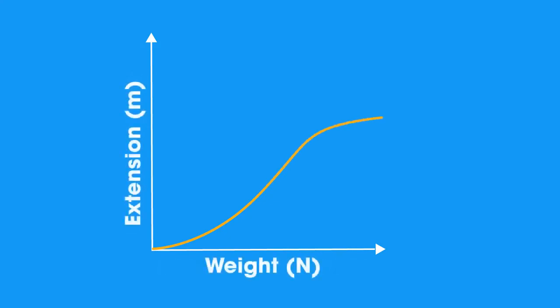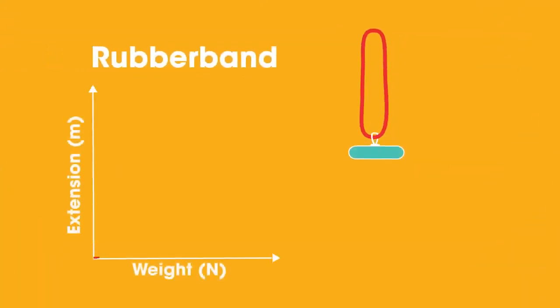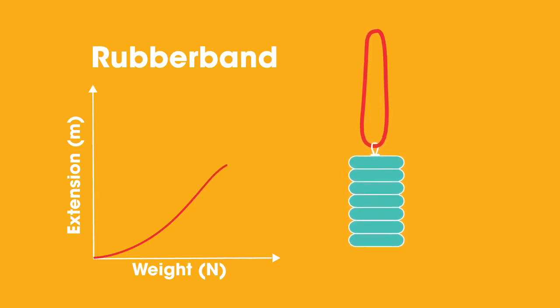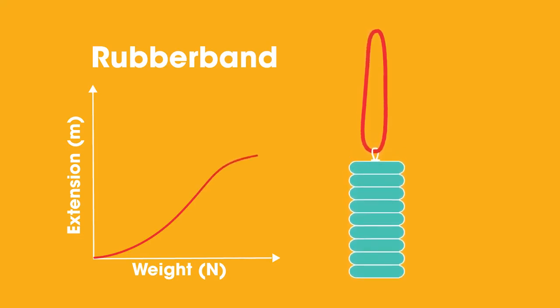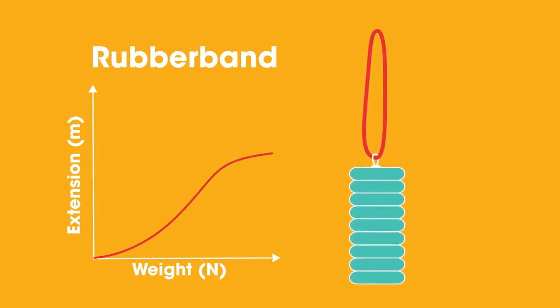Here's the graph we get if we perform the same experiment but use a rubber band instead of a spring. The result with a rubber band does not give a straight line graph. As weights are hung on a rubber band to start with, there is hardly any stretching. Then it stretches a lot before almost stopping as the band is extended fully. This is an example of a non-linear relationship and the band doesn't obey Hooke's law.